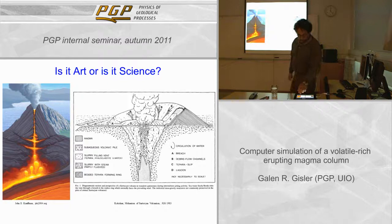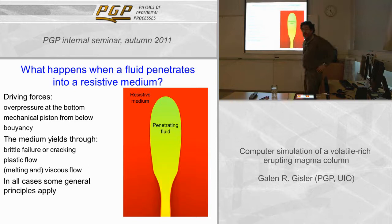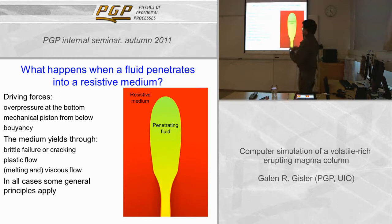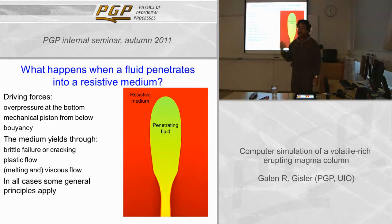I want to talk first about what happens when a fluid penetrates into a resistive medium. You can imagine driving forces of different natures: an overpressure at the bottom, simply buoyancy, or a mechanical piston coming from below. The medium resists the penetration of this fluid but yields in some fashion as well — either through plastic flow, brittle failure, cracking. Maybe the penetrating fluid is hot enough to melt the surrounding material and you start to get viscous flow around it. In all cases, some general physical principles apply.